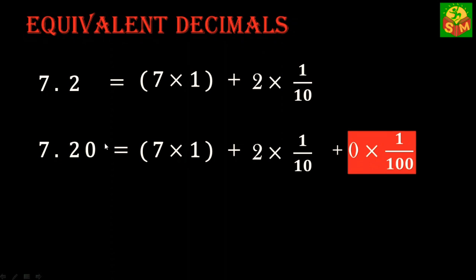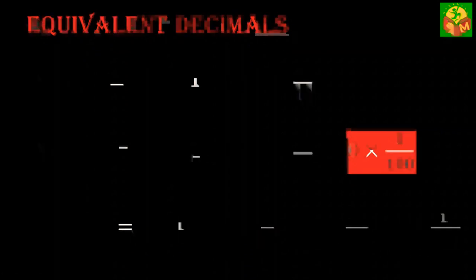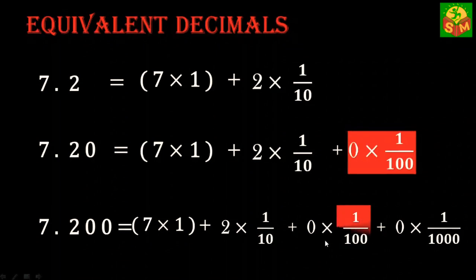Then what about 7.200? 7.200 is 7 times 1 plus 2 times one-tenth plus 0 times one-hundredth plus 0 times one-thousandth. As we know, these two terms are zero.